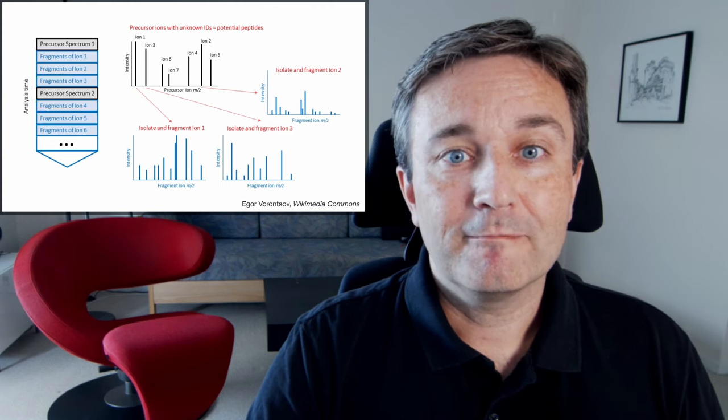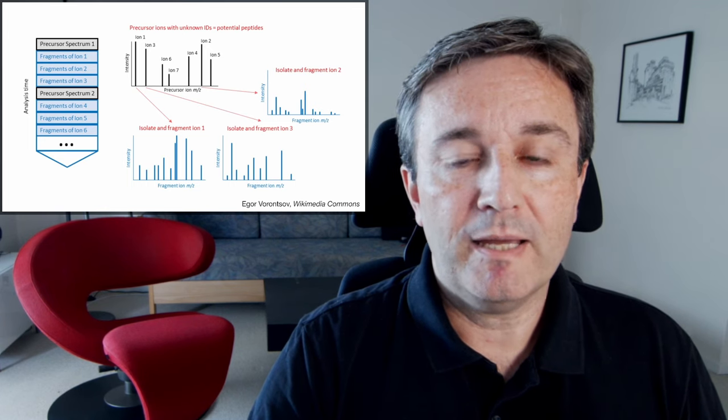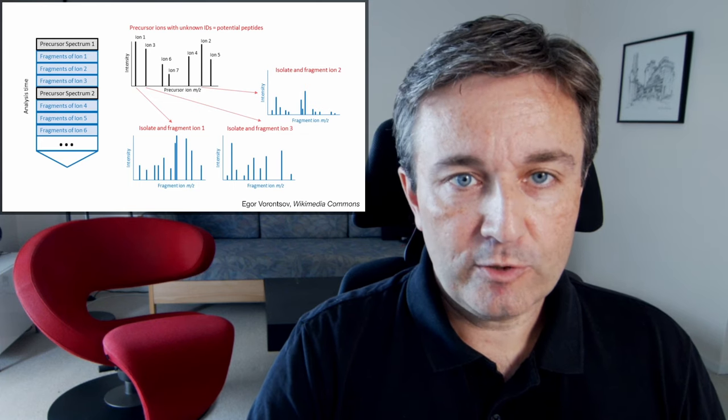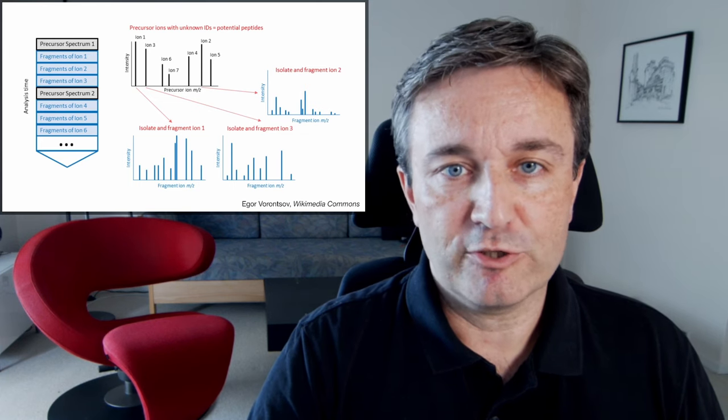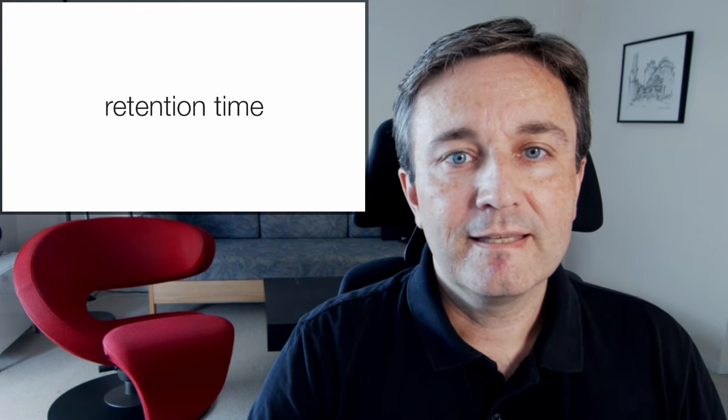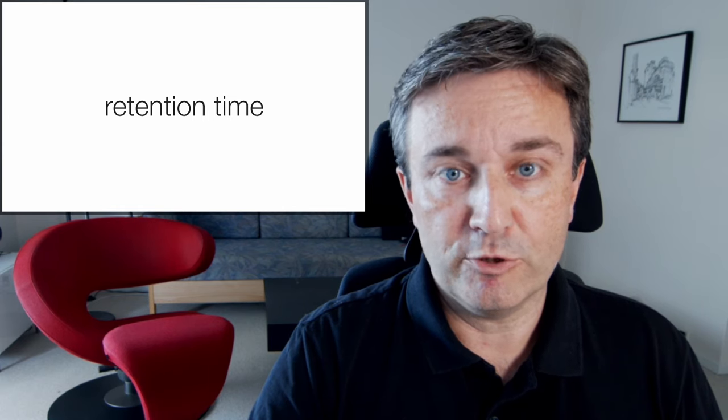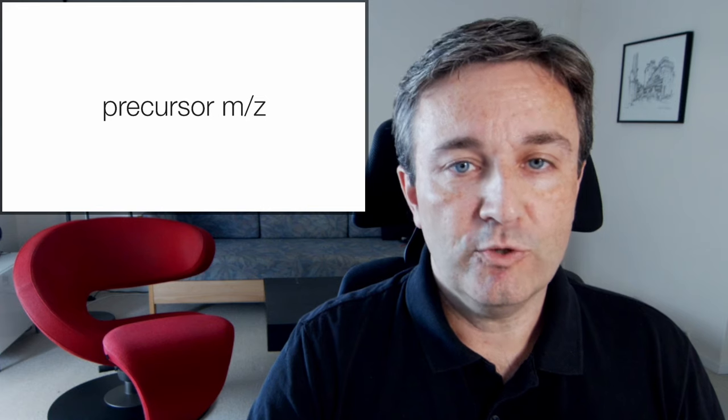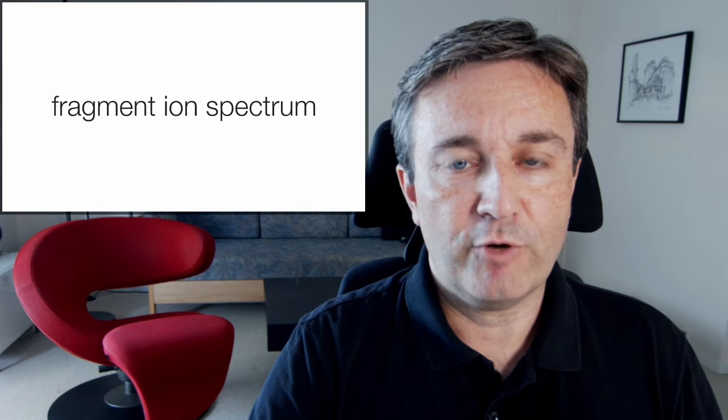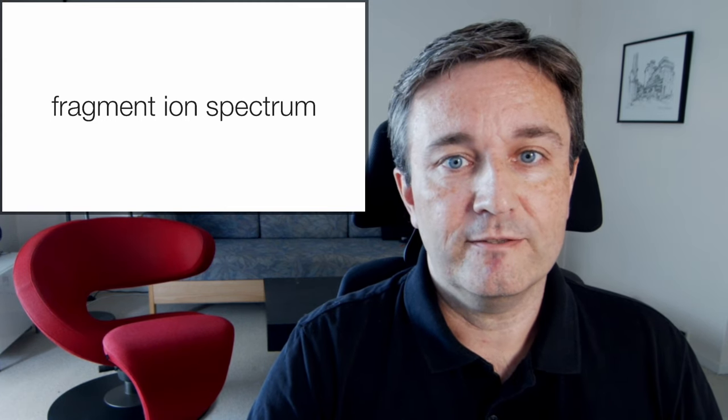What you get here is that you first separate things in time, then separate them by mass to charge ratio of the precursors, select certain precursor ions from the precursor spectrum, and produce fragment ion spectra for these. This means that for each selected ion, you have the retention time from the column of liquid chromatography, you have the precursor mass to charge ratio, and you have the fragment ion spectrum. That's a lot more information to allow you to identify the ions.